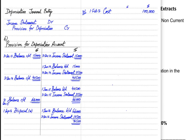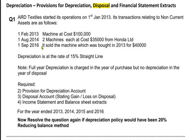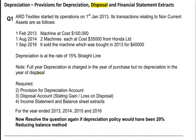We are going to charge depreciation for three years: 2013, 14, and 15. We are not charging depreciation for 2016, although we sold the asset close to the end of the year, because ARD Textiles uses a full year policy. In a full year policy, we charge full year depreciation the year of purchase, and no depreciation the year of disposal.